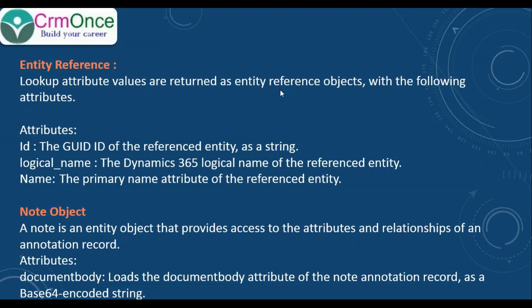For lookup fields, it will return as an entity reference object. The entity reference object follows three attributes: id, logical name, and name of that lookup record.